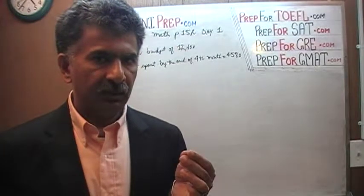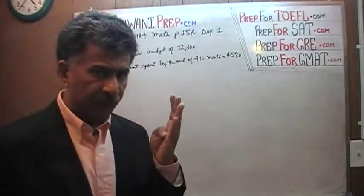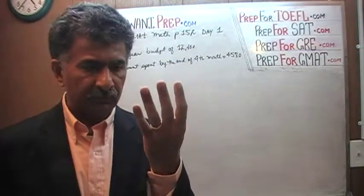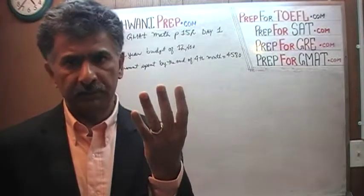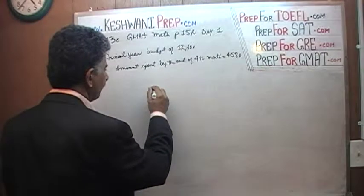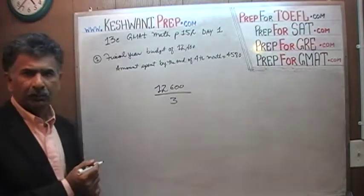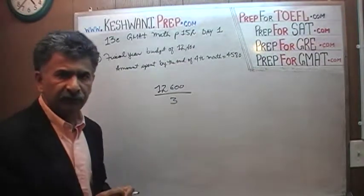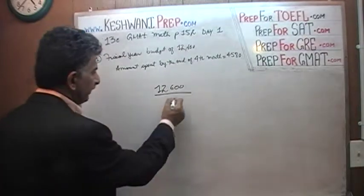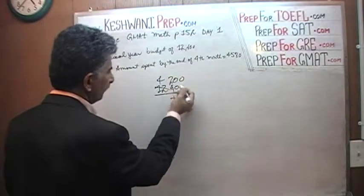Find shortcuts and learn how to take the exam smartly. What we have to understand is that four months represents a third of the year. So instead of taking the monthly amount, let's just divide by three. If you divide $12,600 by three, that represents the amount they were supposed to spend for the first one-third of the year — the same as the first four months. How many threes in twelve? Four. How many threes in six? Two. So it's $4,200.